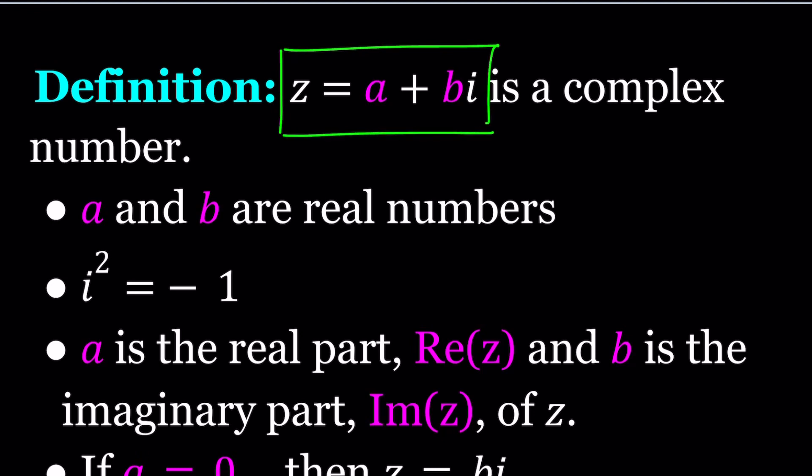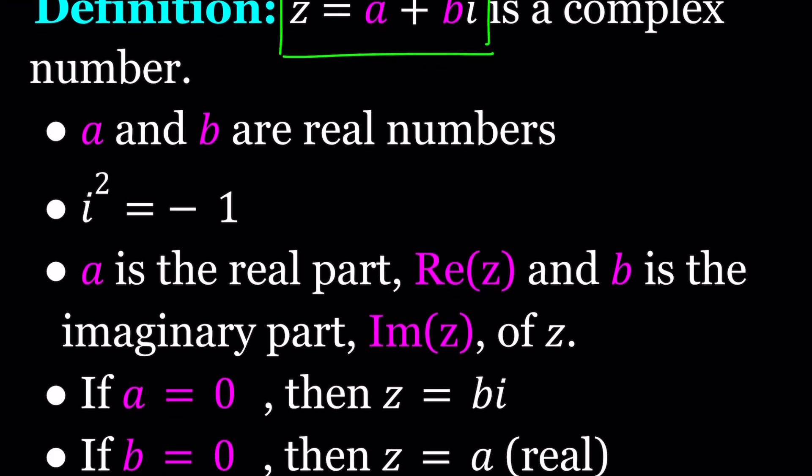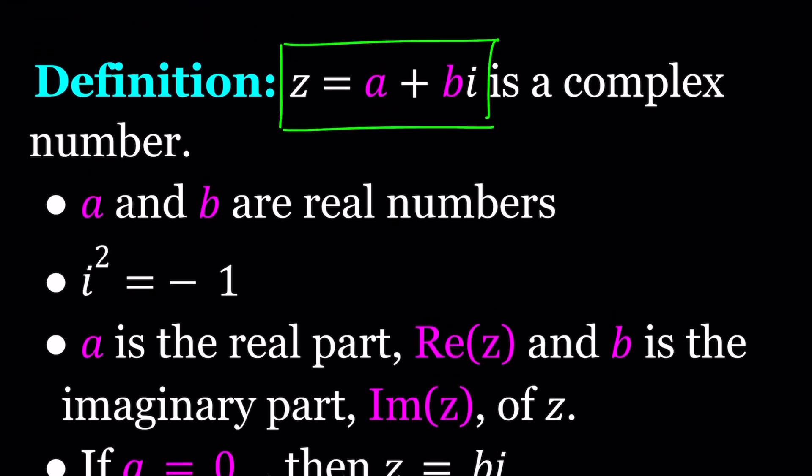A is the real part because notice that there is no i being multiplied by A. And B is the imaginary part because B is the coefficient of i. So those definitions, this is just terminology. And I'm going to share with you these definitions so you get to look at it. I'll share a PDF file with you as well.